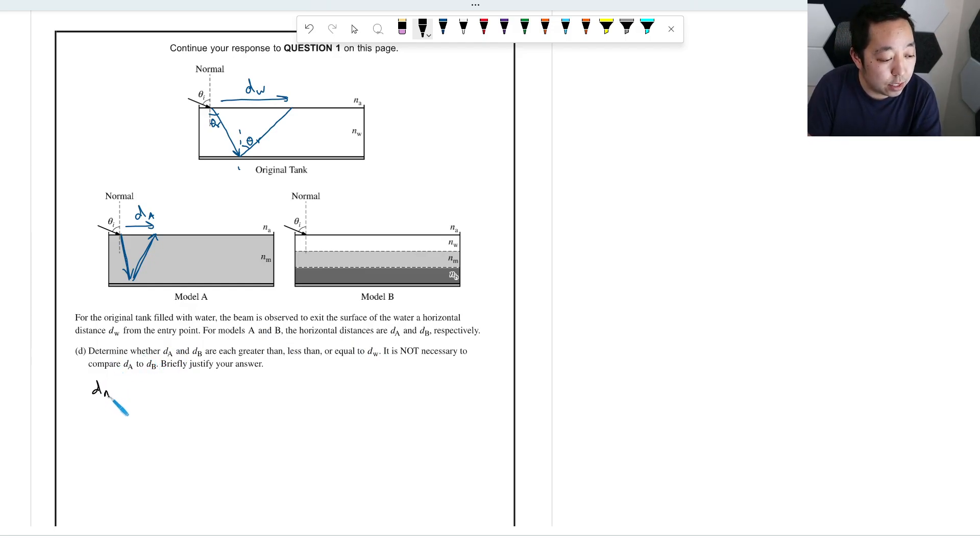So for DA compared to DW, that's the first comparison we want to make. We want to say that DA is going to be less than DW. And that is because the higher index of refraction implies that the light will bend more sharply. So the reflection bounces closer.